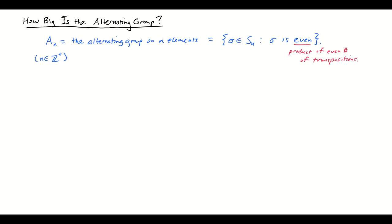We're going to figure out what is the order of the group A sub n. Let's start with an easy one: n equals 1. If n is 1, then A sub 1 is just the identity permutation, because S of 1 is the set of all bijections of one element, and the only bijection is the identity, which is even — it's a product of no transpositions. So A of 1 is just the identity subgroup, which means the order of A of 1 is 1, the same as S of 1.